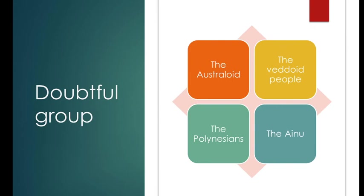The last group is the Doubtful Group. This group includes all the races which do not have very clear-cut characteristics of any of the above three major groups. They possess some physical traits of the Negroid, some of the Mongoloid, and some of the Caucasoid. This group includes four subgroups, which we will study one by one. Number one is the Australoid.